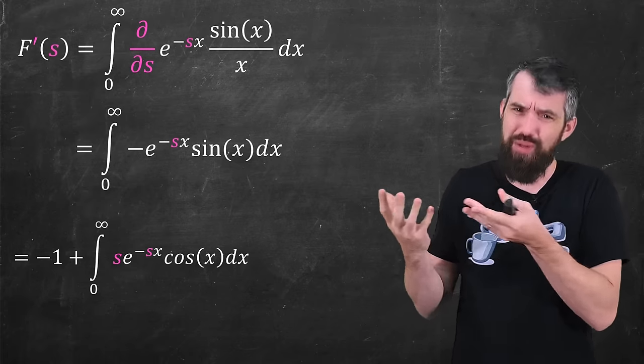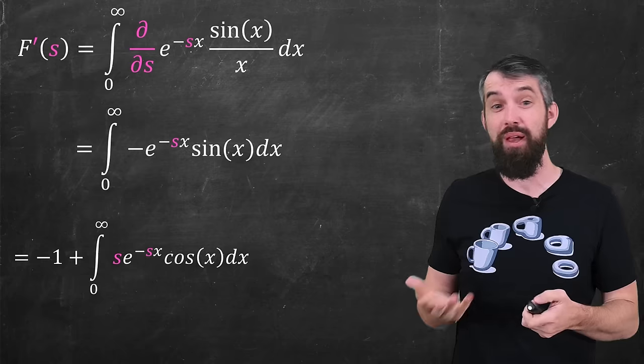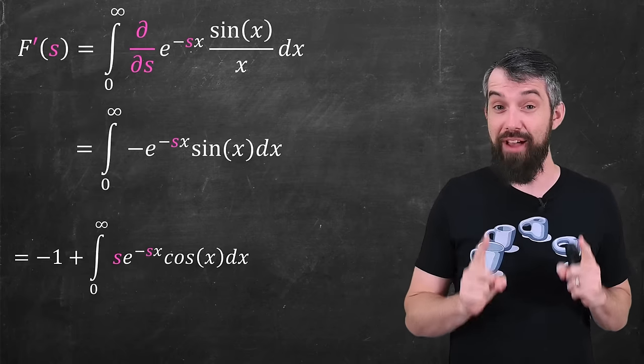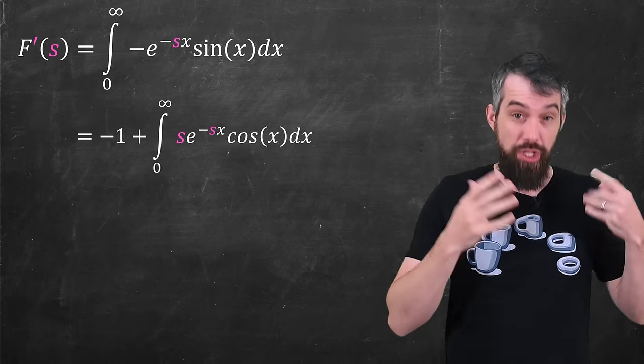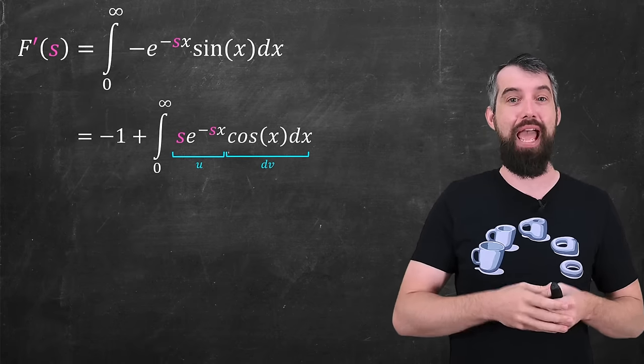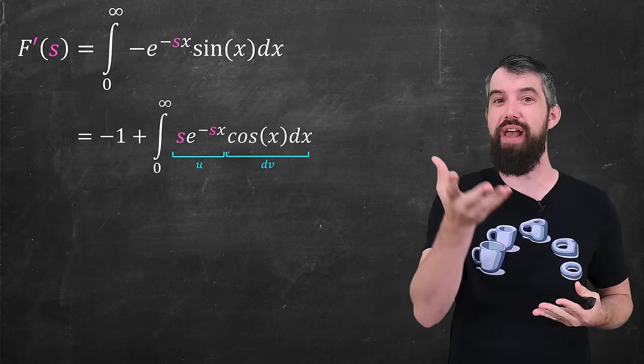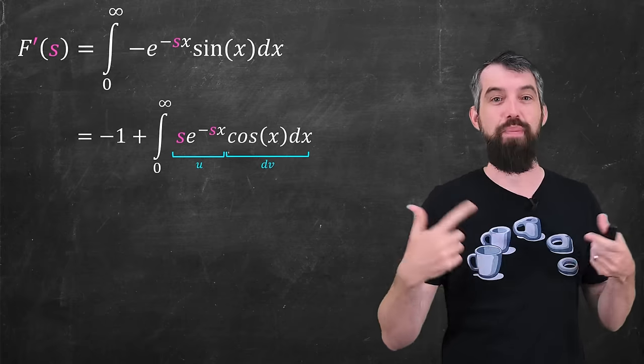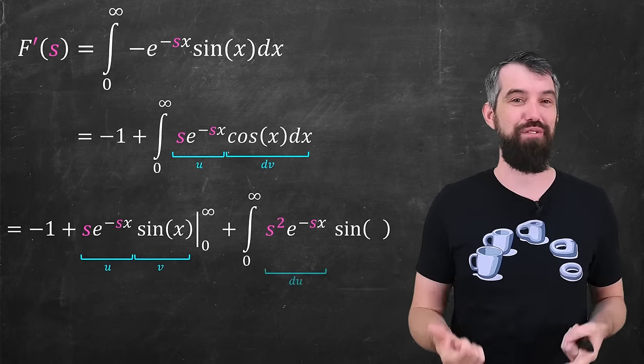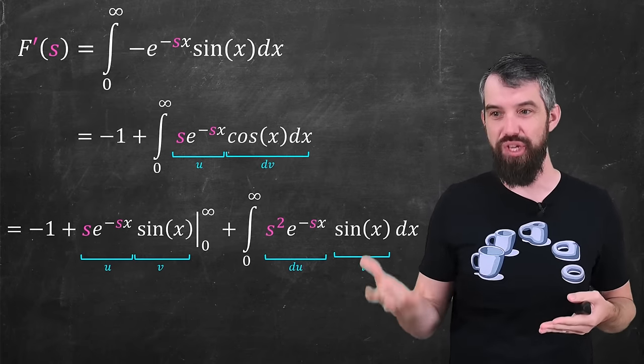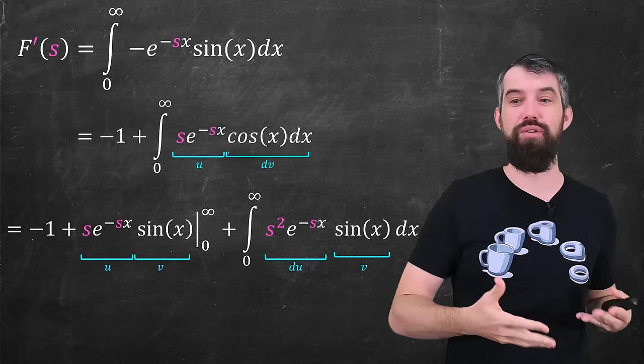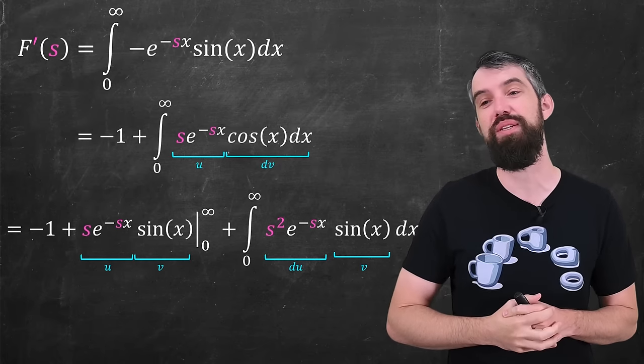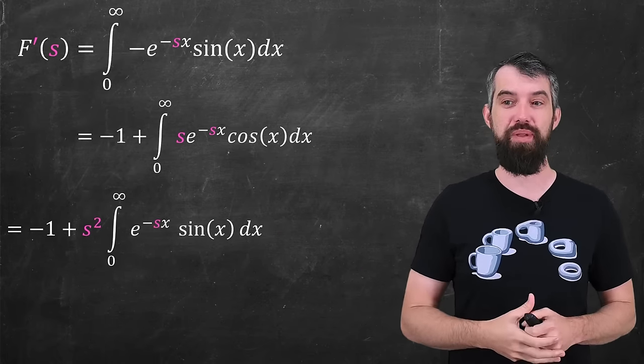But the integral is actually not that much easier. It's still an exponential times a cosine term now. But watch what happens. I'm going to have to do this integration by parts twice. I'm going to do a new integration by parts on this. U is going to be the exponential, and dv is going to be the cosine of x dx. Integration by parts, once again, gives me the formula uv minus v du. For the term at the front, when you take the limit as it goes to infinity, it's going to go to zero. When you plug in zero, sine of zero is zero. So the whole thing at the front is just going to be zero.